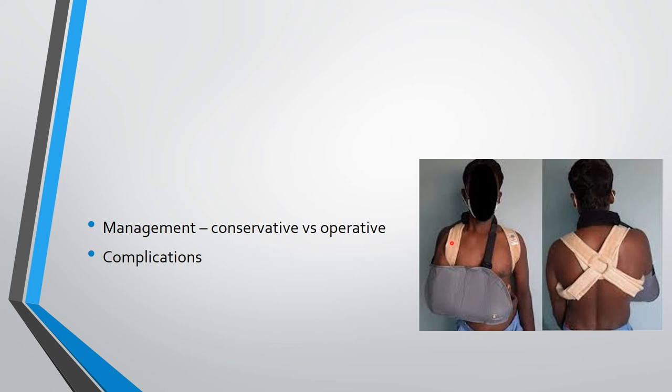Operative management involves nail or plate fixation. In conservative management there are chances of cosmetic deformity, malunion, or nonunion. In operative management there are chances of infection, plate prominence, and nail migration. Both management options should be explained to the patient and discussed.